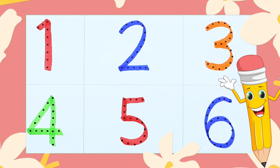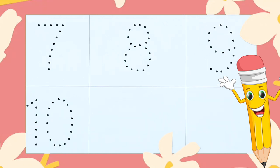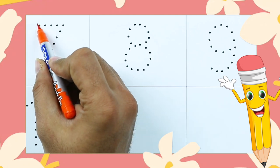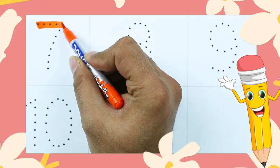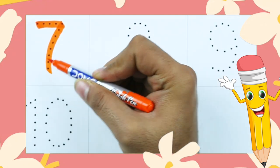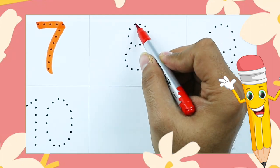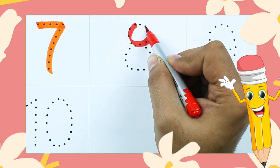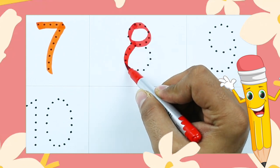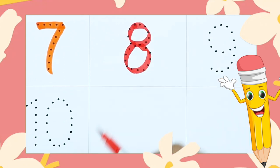Number 7 with orange color. It's number 7. Number 8 with red color. It's number 8.